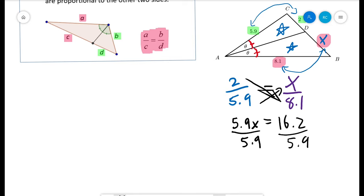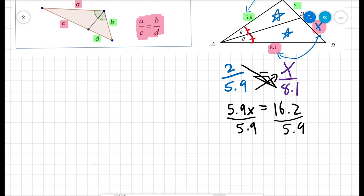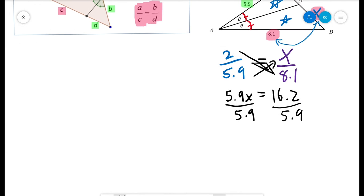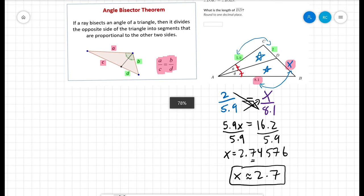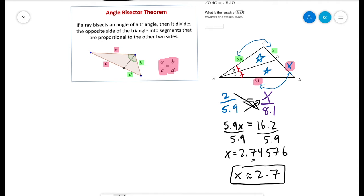Grabbing my calculator. 16.2 divided by 5.9 is 2.745. Now it says to round to one decimal place. So we're going to say that x equals 2.74576, but since we're rounding to one decimal place, we're going to say that x is approximately equal to 2.7.